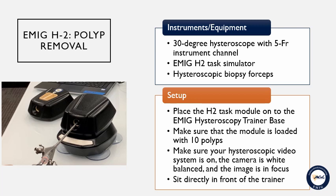To begin, place the H2 task module on the base unit of the Emig hysteroscopy system. Be sure that your video unit and light source are on, the camera is white balanced, and the image is in focus. Seat yourself directly in front of the trainer, making sure to have a clear line of sight to the video display.